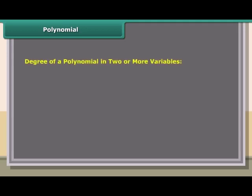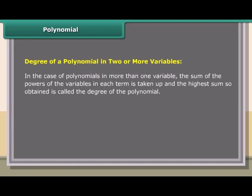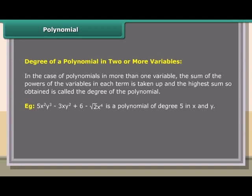Degree of a polynomial in two or more variables: in the case of polynomials in more than one variable, the sum of the powers of the variables in each term is taken, and the highest sum so obtained is called the degree of the polynomial. Example: 5x²y³ minus 3xy² plus 6 minus √2·x⁴ is a polynomial of degree 5 in x and y.